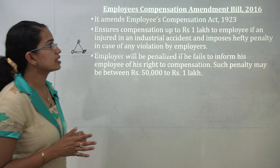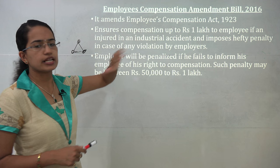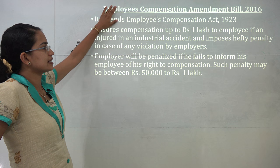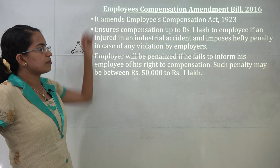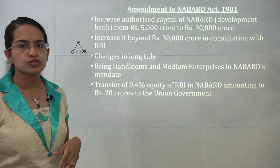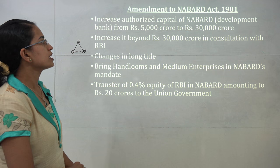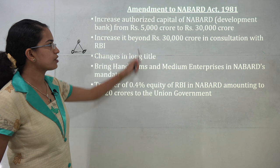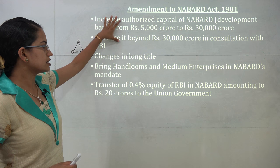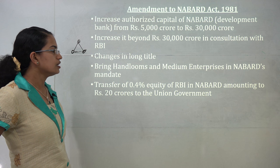The Employee Compensation Amendment Bill 2016 was brought after amendments to the Employees Compensation Act 1923. It talks about compensation of up to 1 lakh if an employee is injured in an industrial accident, with a hefty penalty to the employer. The employer would also be penalized if they fail to inform the employee about the right to compensation — this penalty can vary from 50,000 to 1 lakh. Amendments to the NABARD Act include an increase in authorized capital from 5,000 to 30,000 crores, with further increases allowed with RBI permission. Handlooms and medium enterprises have also been brought under its scope.